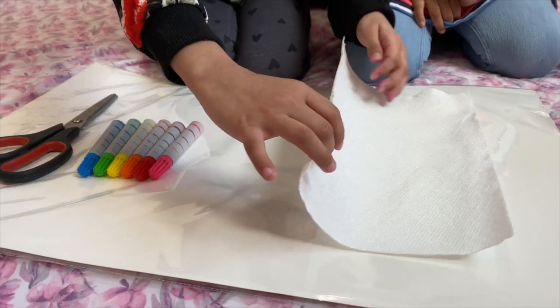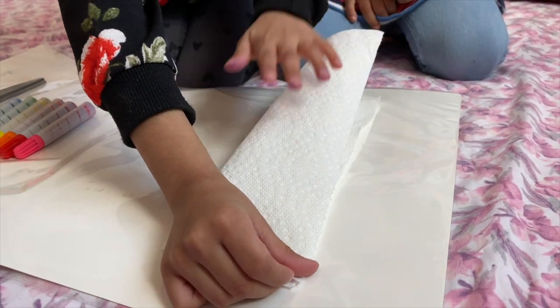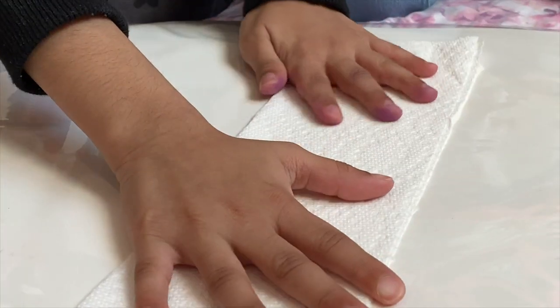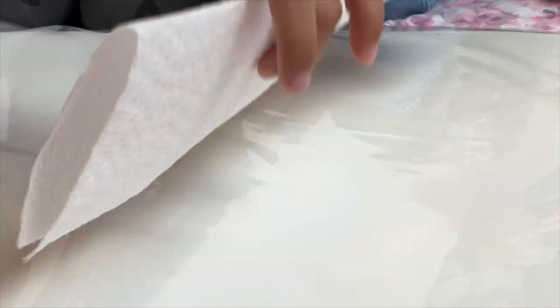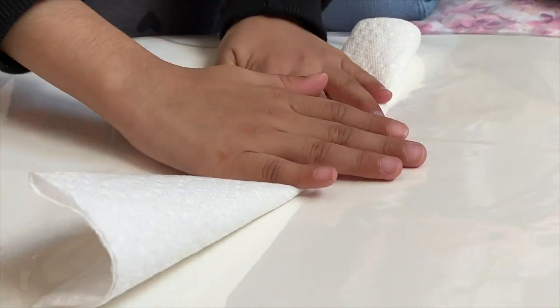So we're going to be folding the tissue. And make sure that they're touching the same side. And then you're going to turn it around and fold it again. And this is what it should look like.